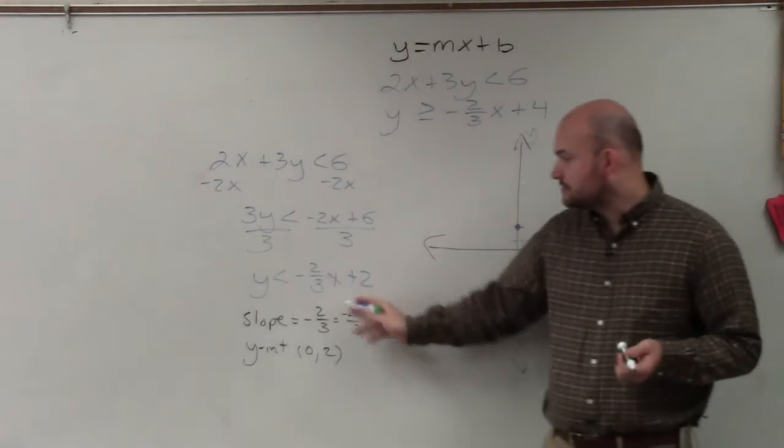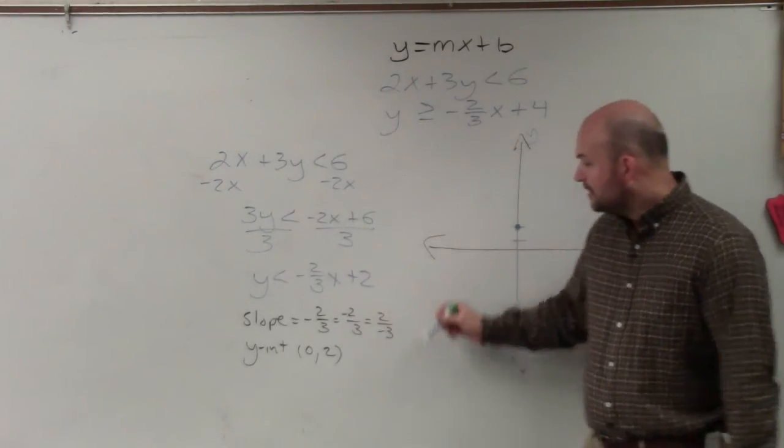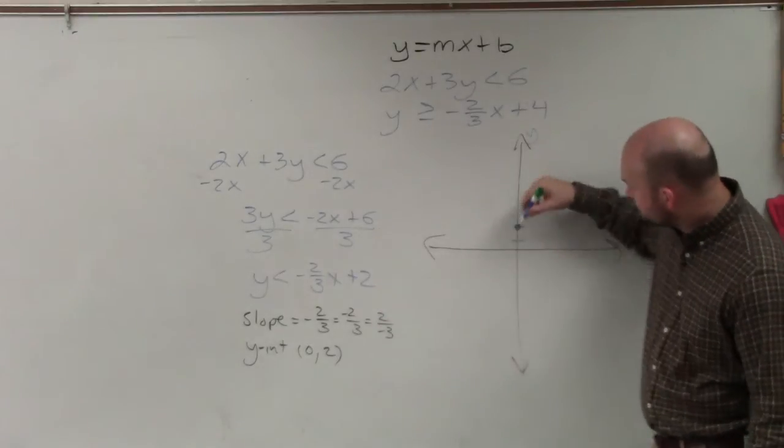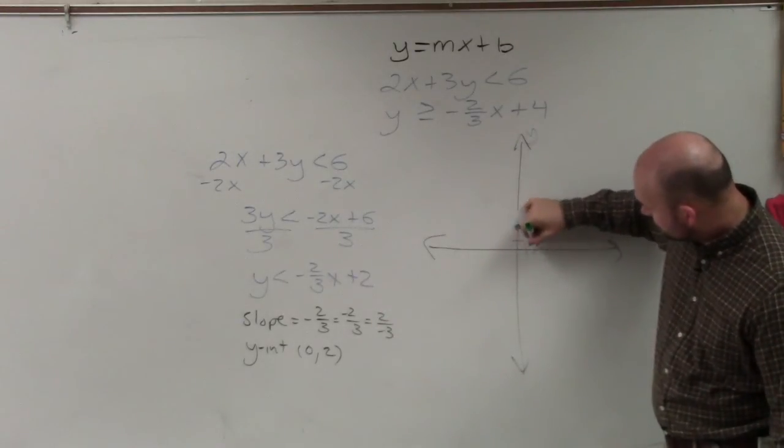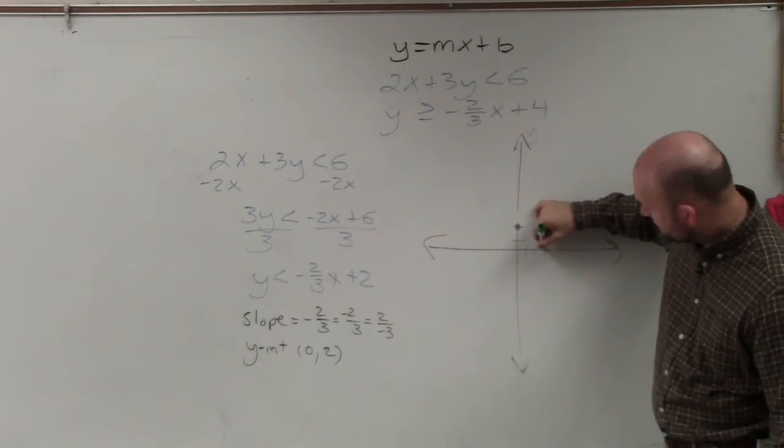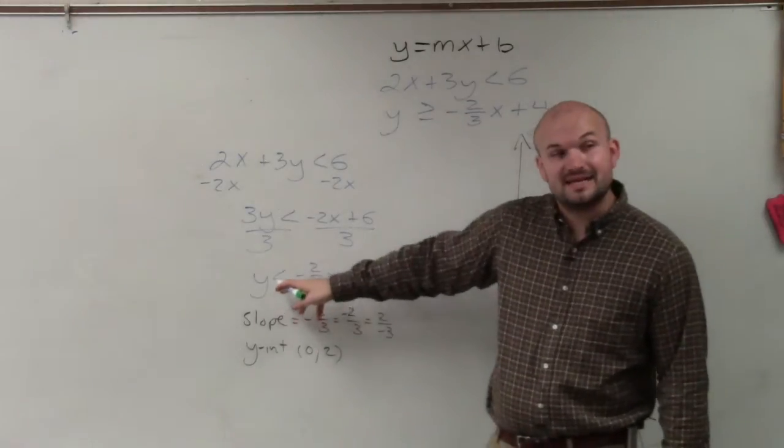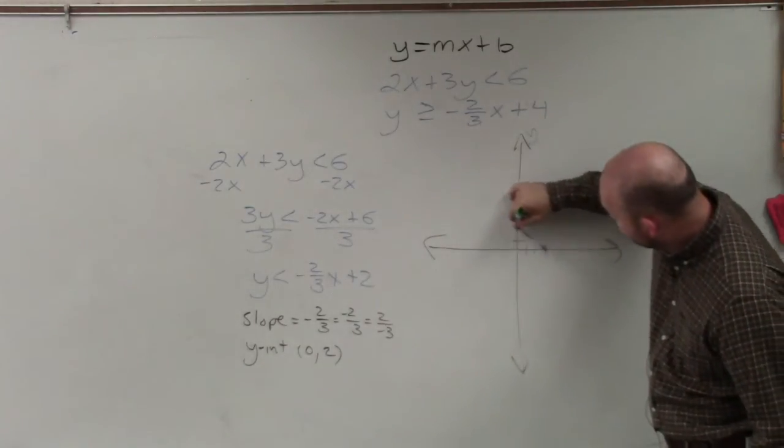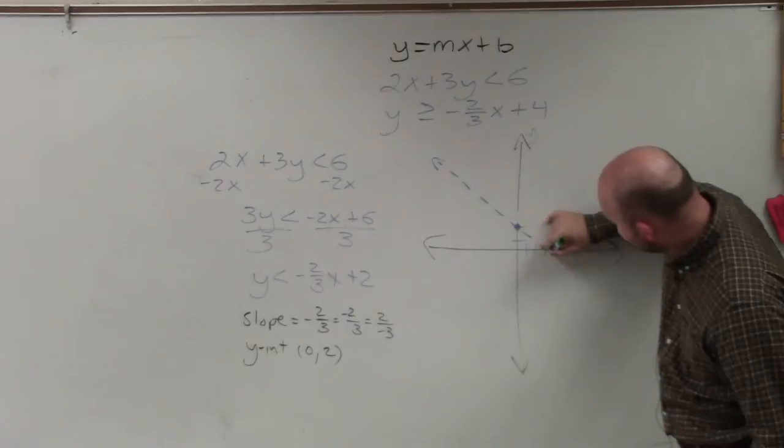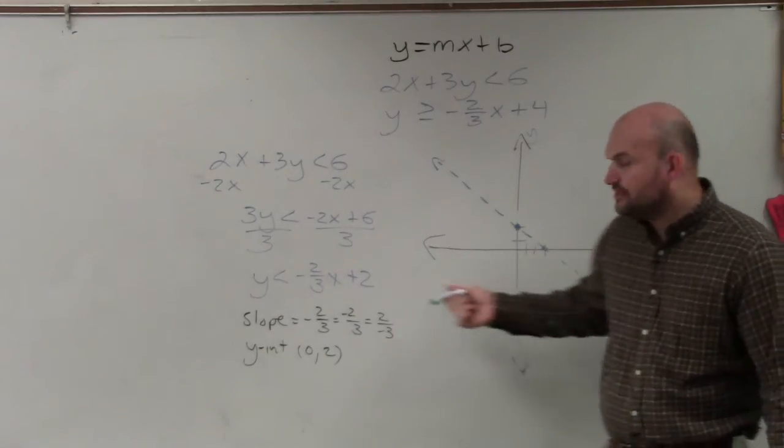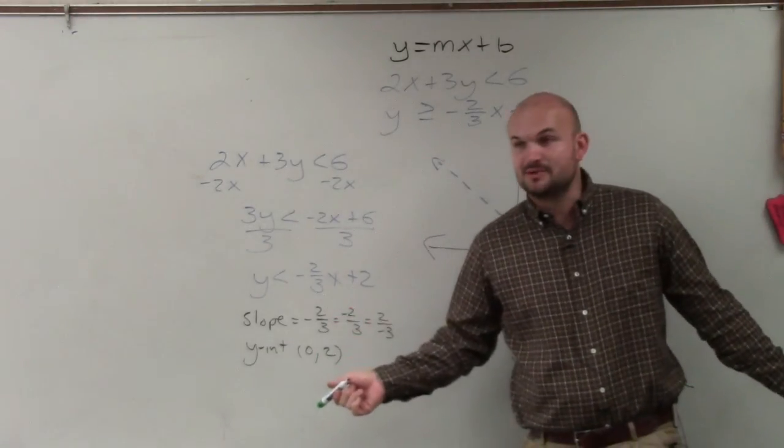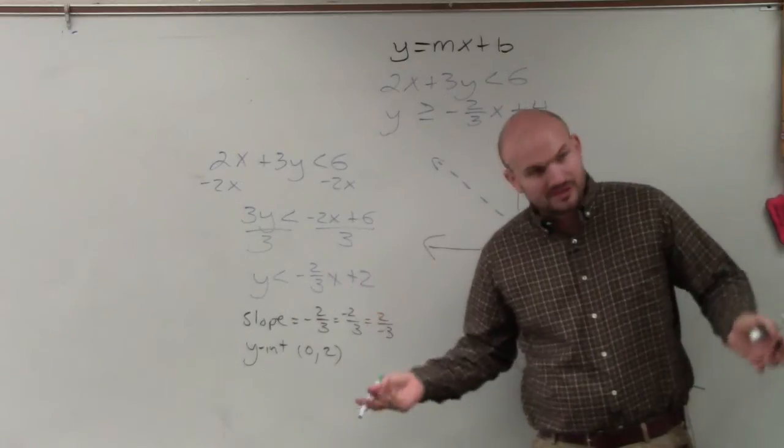And just to show you that negative 2 thirds, the negative can be in the top and bottom, I'm going to have the negative up top. So that's going to tell me to go down 2 to the right 3. That is a less than symbol, so therefore my line is not included. So I'm going to use a dashed line. Then you could obviously use a test point, and the best test point to choose would be 0, 0.